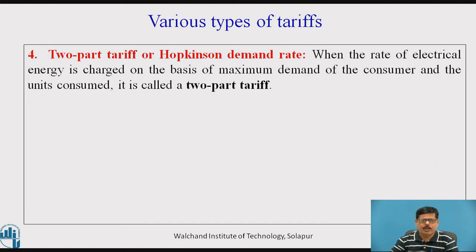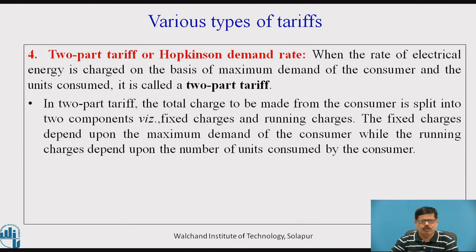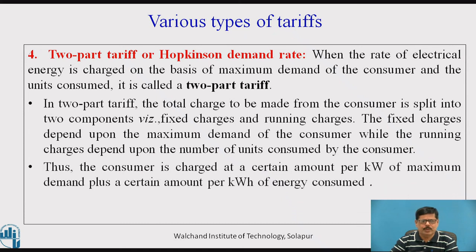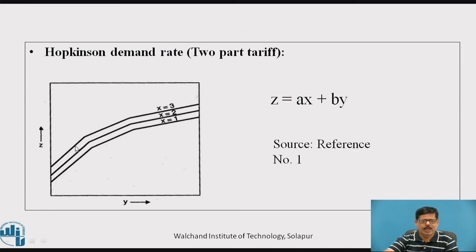The next form is the two-part tariff or Hopkinson demand rate. When electrical energy is charged on the basis of maximum demand plus number of units consumed, it is called a two-part tariff. The total charge is split into two components: fixed charges (depending on maximum demand) and running charges (depending on units consumed). The consumer is charged at a certain rate per kilowatt of maximum demand plus a certain amount per kilowatt-hour of energy consumed: Z = AX + BY.